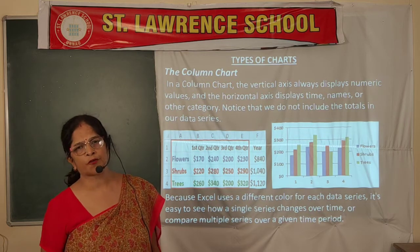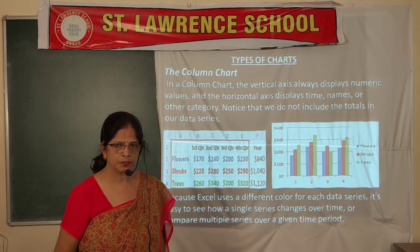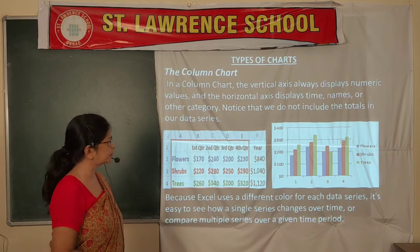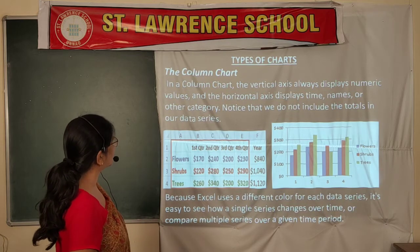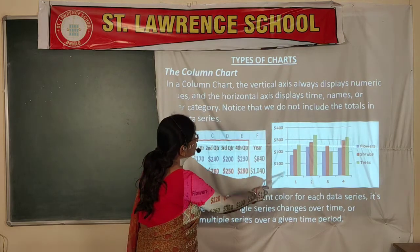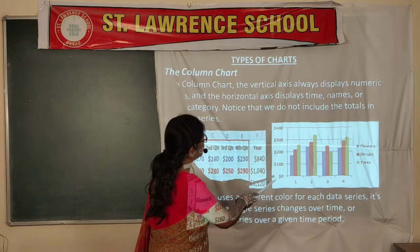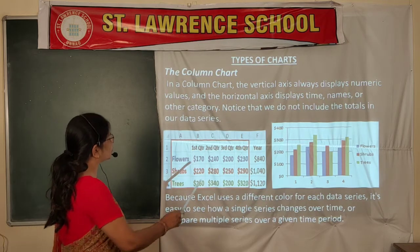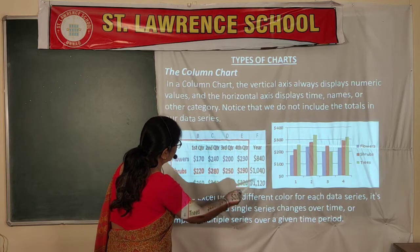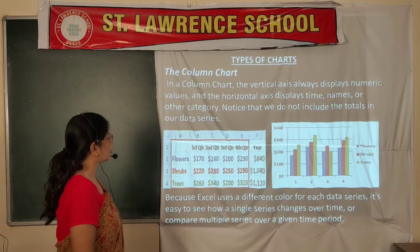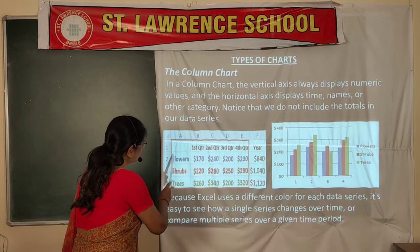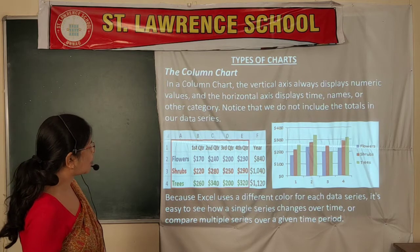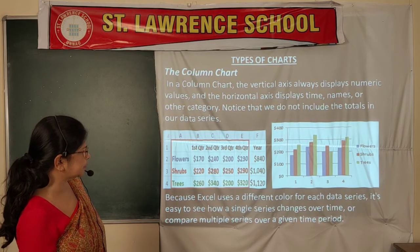In Excel there are a total of 15 types of charts. We will discuss the important ones. The first is the column chart. In a column chart, the vertical axis always displays numeric values and the horizontal axis displays time, names, or other categories. When creating a column chart, do not include total values — select only the table where the different data series exist, because Excel uses a different color for each data series.